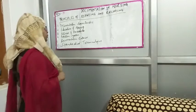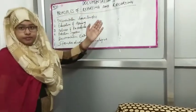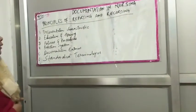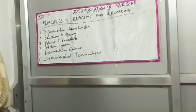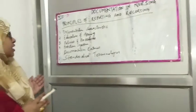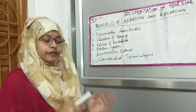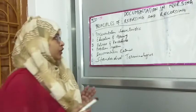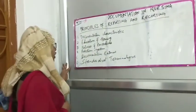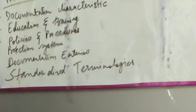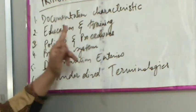Today we are going to read about principles of reporting and recording. The reason we have a principle of reporting and recording is that there are different healthcare providers and nursing providers, so they should not have different principles of documentation. We will make standardized principles — there are six principles total: documentation characteristics, education and training, policies and procedures, protection system, documentation entries, and standardized terminology.